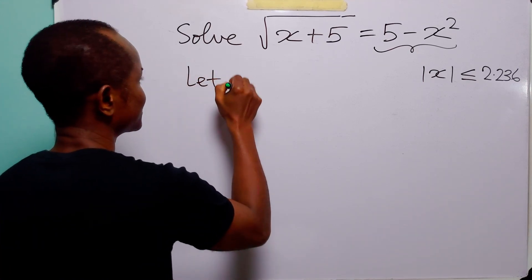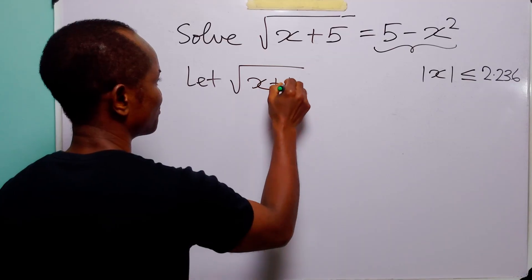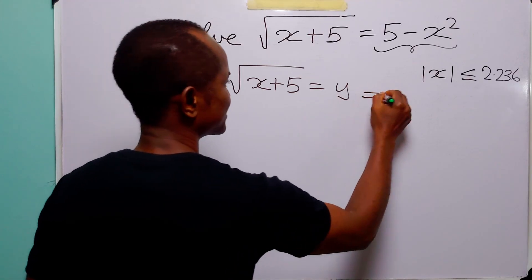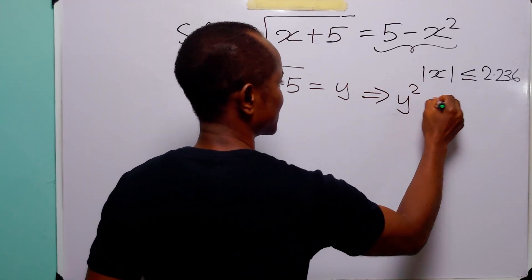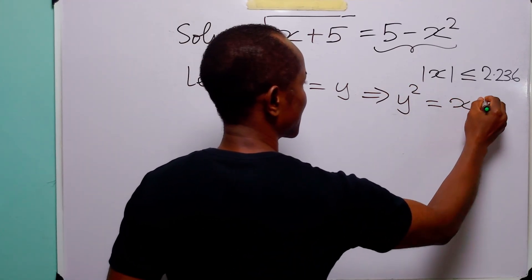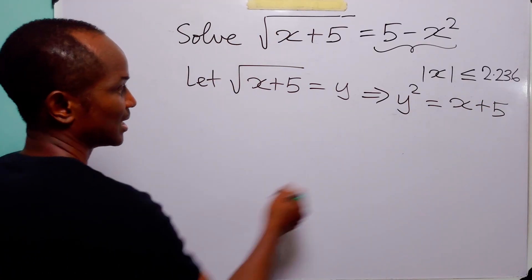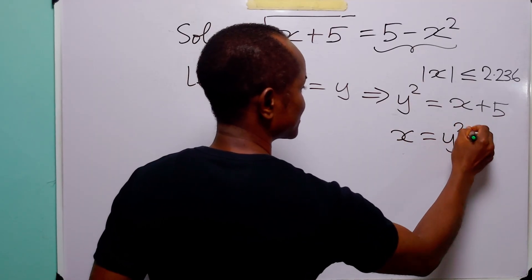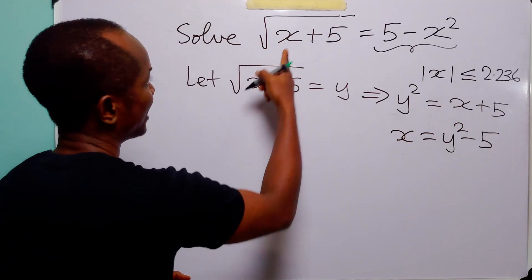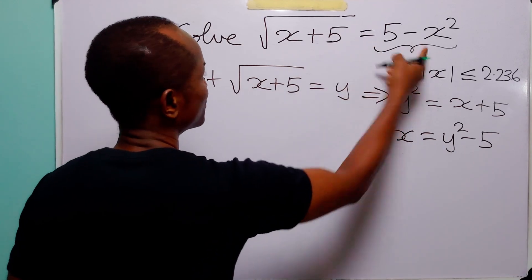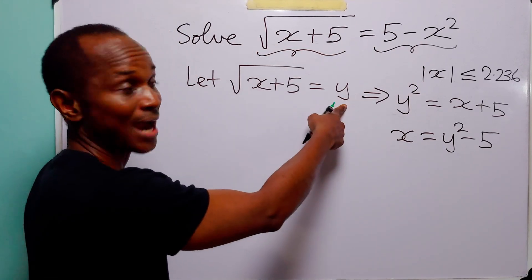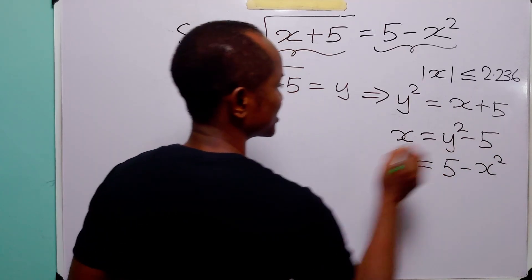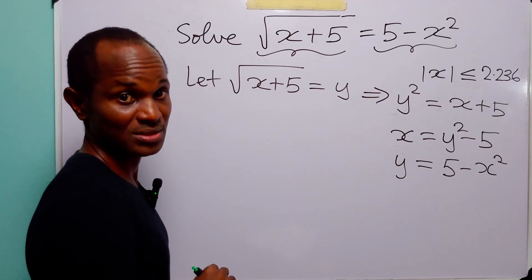Let the square root of (x + 5) equal y. This implies that y² = x + 5, and rearranging gives x = y² - 5. From the original equation, since the square root expression is now equal to y, we have y = 5 - x².